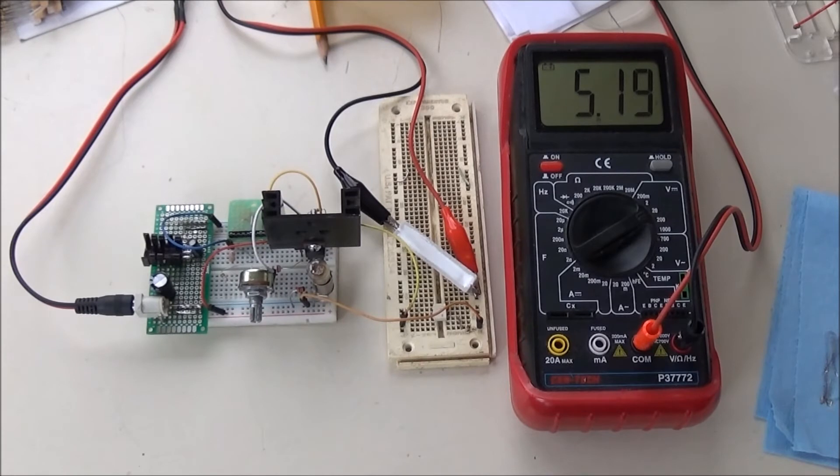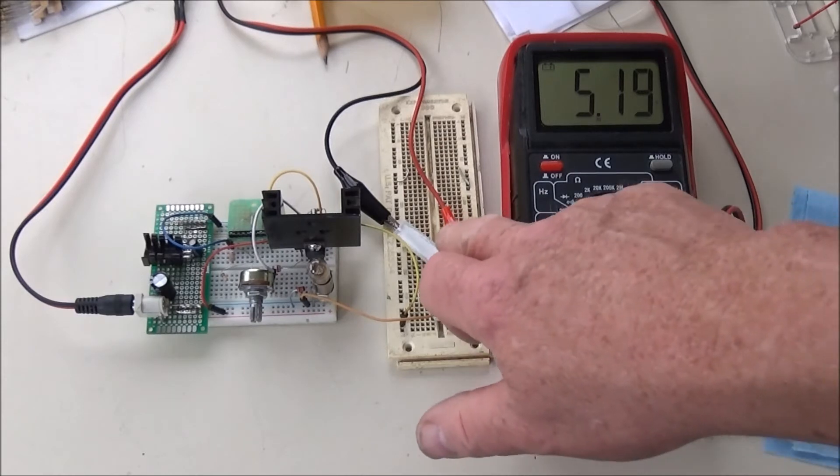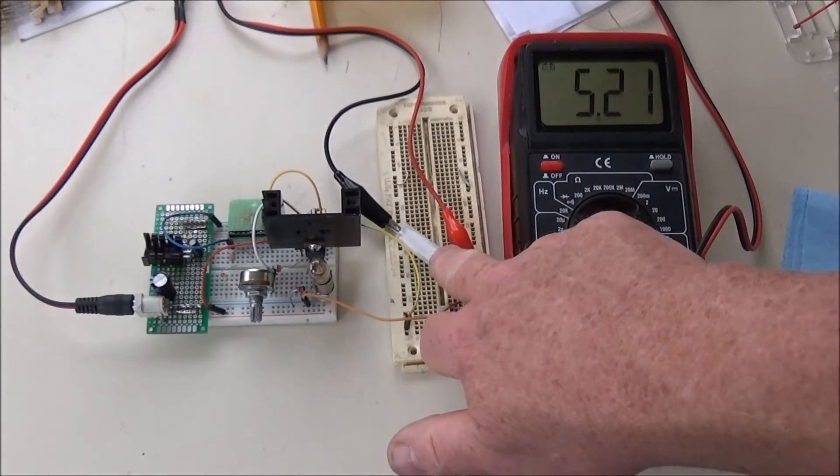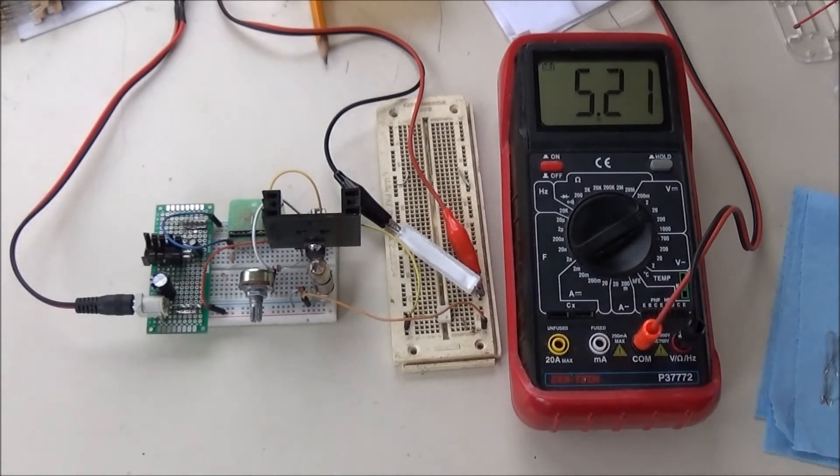All right, what we have here is a TL431 precision current regulator configuration. I'm putting out about half an amp to a 10 ohm load that's getting quite hot.